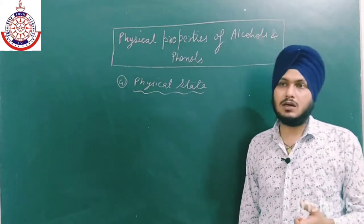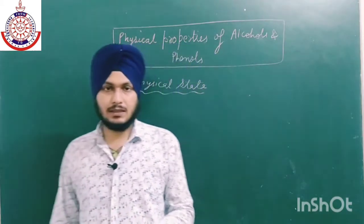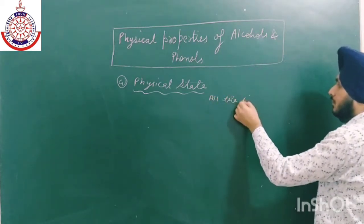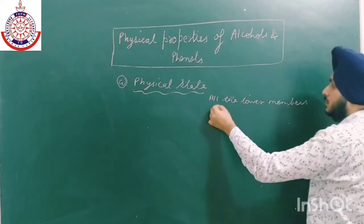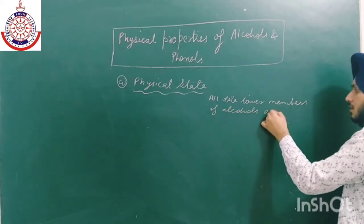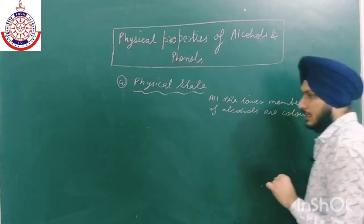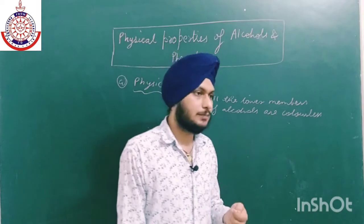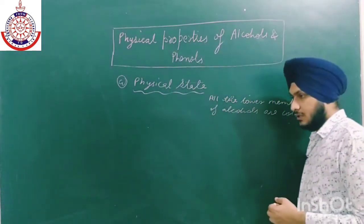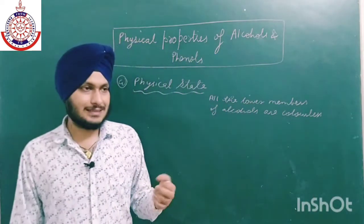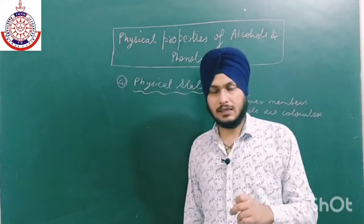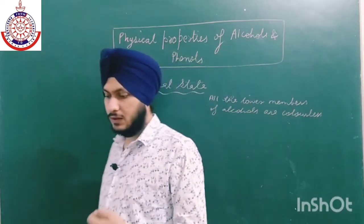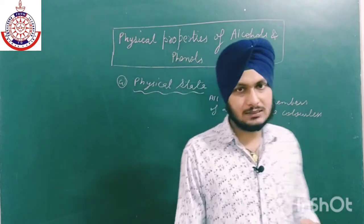Generally, all lower members of alcohols are colorless liquids with a burning, light smell. Methanol is highly poisonous, and bottles of ethanol used in labs often contain one or two percent methanol. Higher members of alcohols are also liquids. Phenols, on the other hand, can be liquids or solids depending on the member.